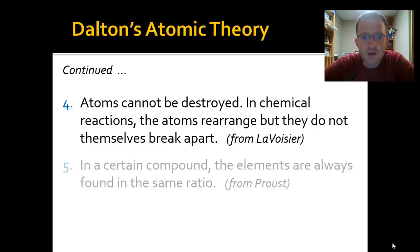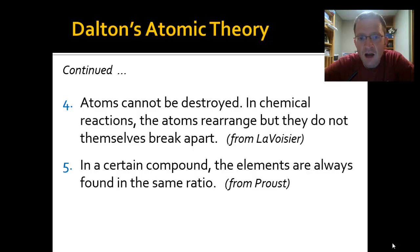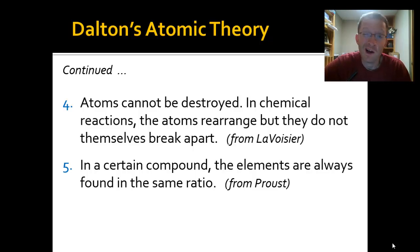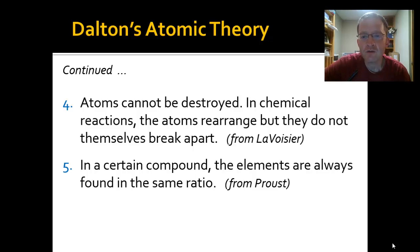Finally, part five of Dalton's atomic theory, drawn from Proust's work on definite proportions, states that in a given compound the elements are always found in the same ratio. Water, H₂O, will always be a two-to-one ratio of hydrogen to oxygen. Anytime you see hydrogen and oxygen in that ratio it will be water, and every water molecule will always be H₂O. That's it for this video — we'll be back with the next characters and start talking about subatomic particles.